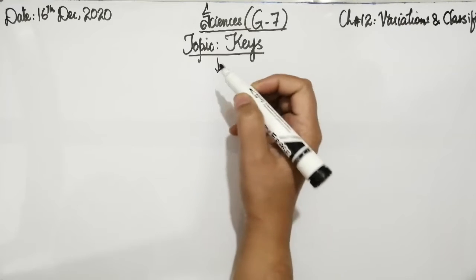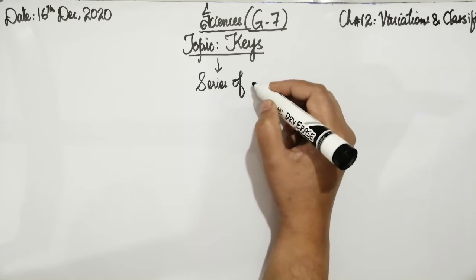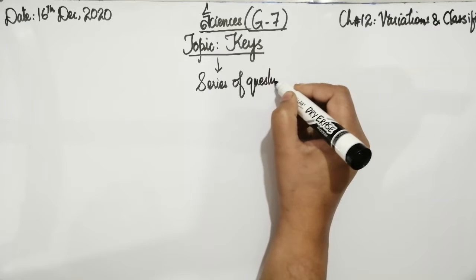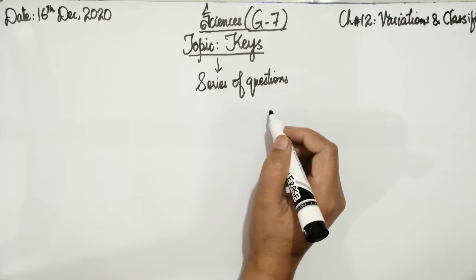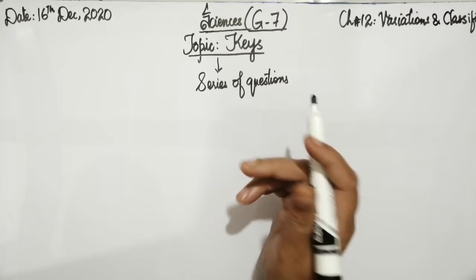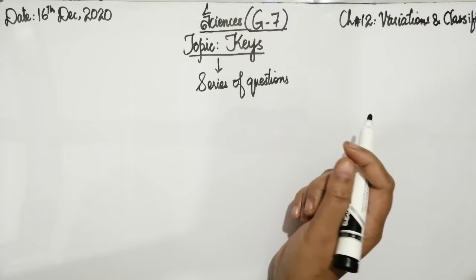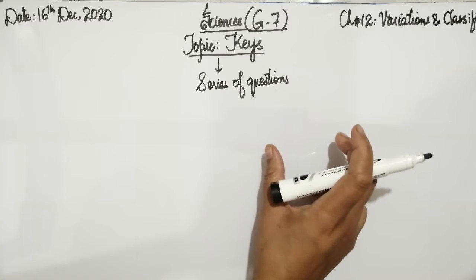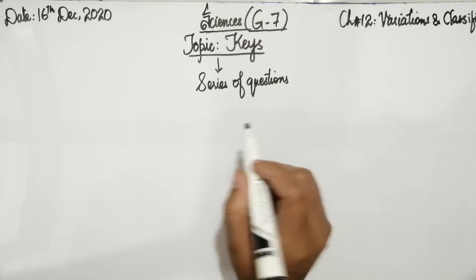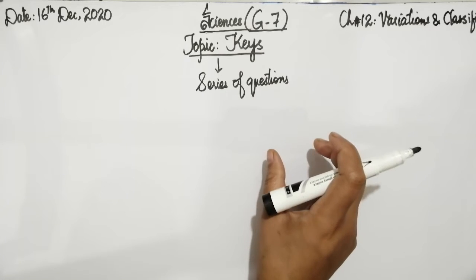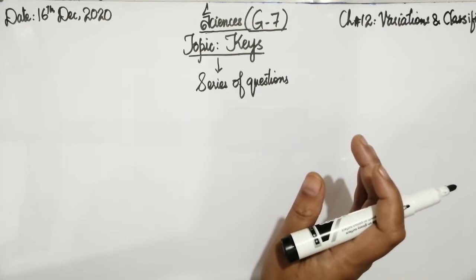Keys basically is a series of questions. Each answer leads on to another question. This continues until eventually the name of the organism is found.